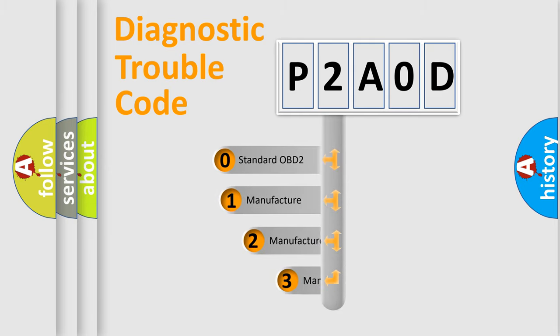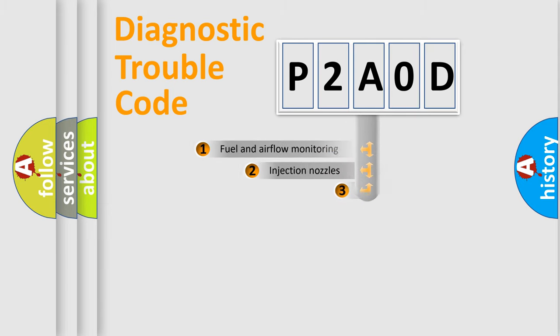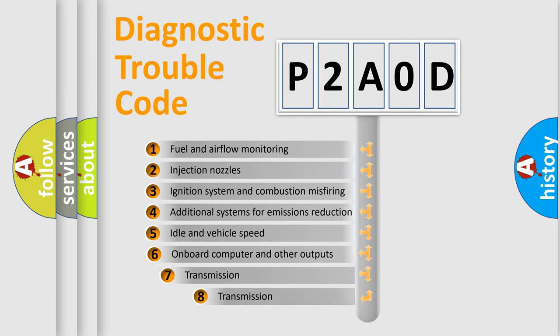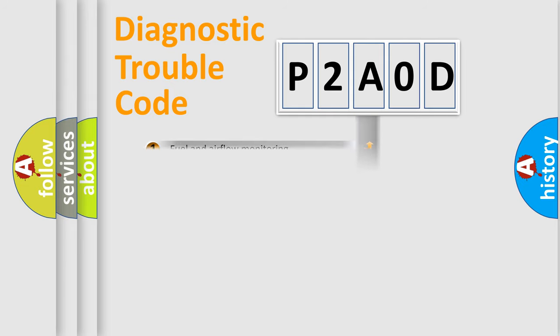If the second character is expressed as zero, it is a standardized error. In the case of numbers 1, 2, 3, it is a more prestigious expression of the car-specific error. The third character specifies a subset of errors. The distribution shown is valid only for the standardized DTC code.